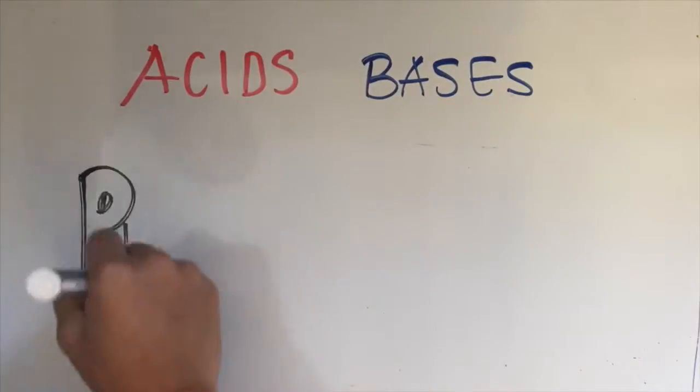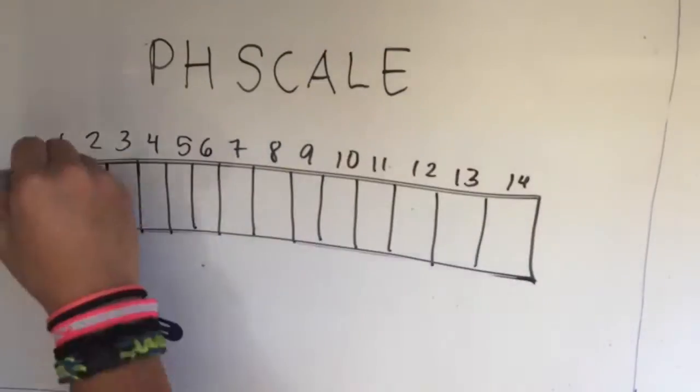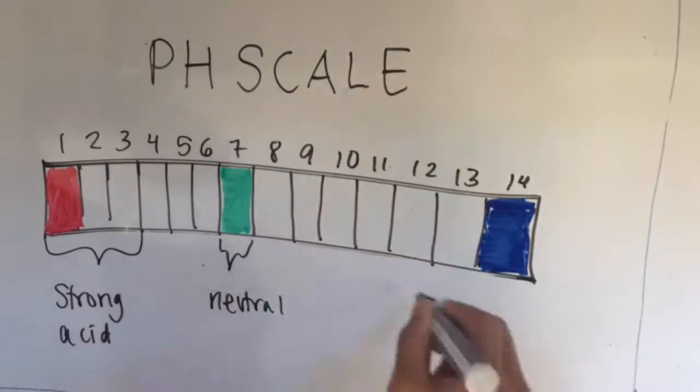Acids and bases are measured on what is called a pH scale. If the substance is more acidic, the pH number will be lower. If the substance is more basic, the pH number will be higher. Numbers range from 1 to 14.